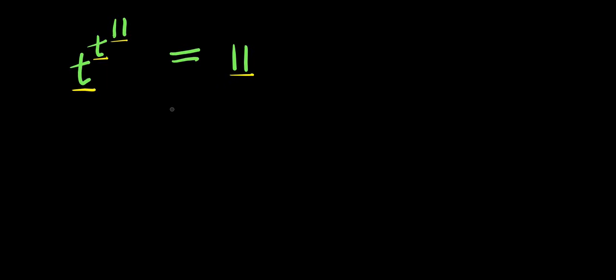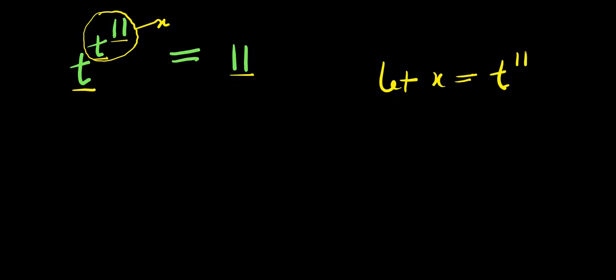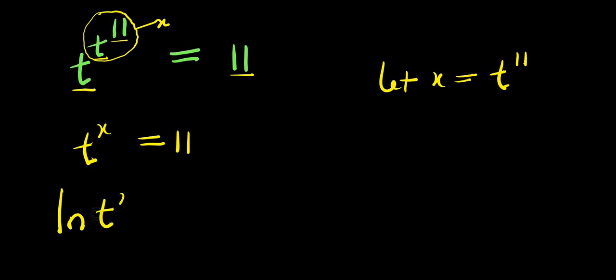We consider this method. I can easily replace t power 11 with a variable x. So let x equals t power 11. After doing that, I will have t power x equals 11. At this point I can apply natural log, and I'll have natural log of t power x equals natural log 11.